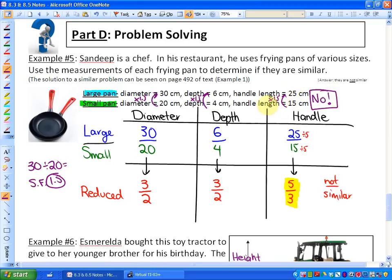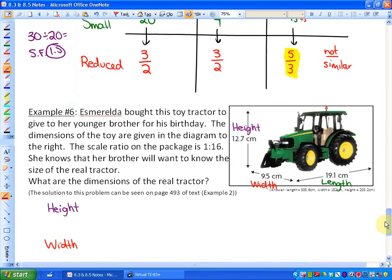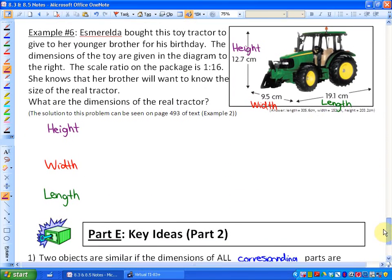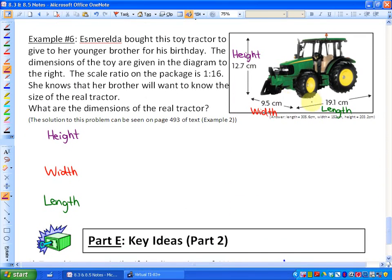The last problem: Esmeralda bought this toy tractor to give to a younger brother for his birthday. The toy tractor's height is 12.7 centimeters, the width is 9.5 centimeters, and the length is 19.1 centimeters. The dimensions are given in the diagram to the right. The scale ratio on the package is 1 to 16.